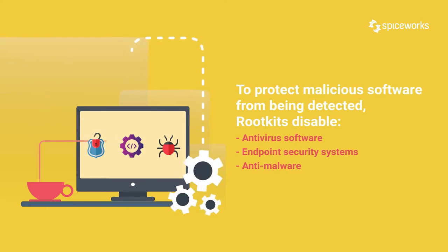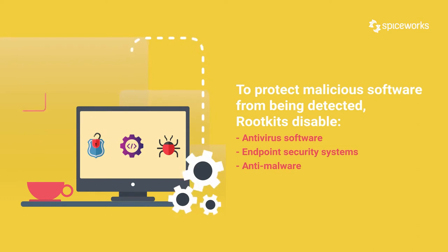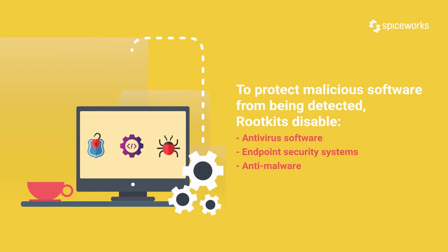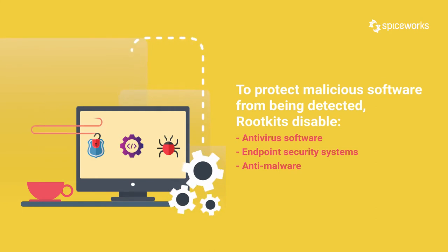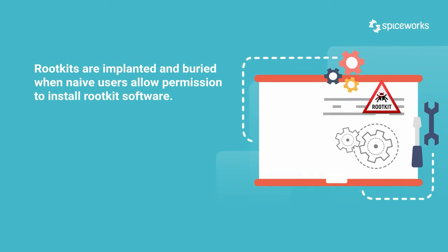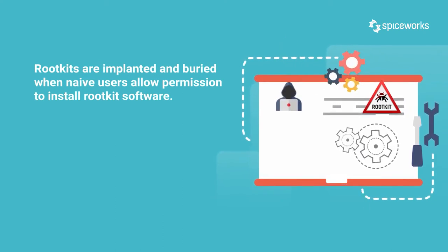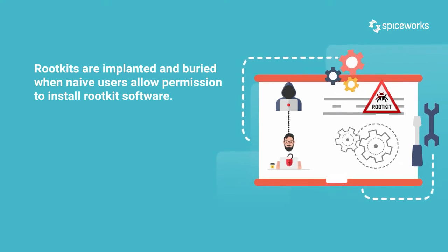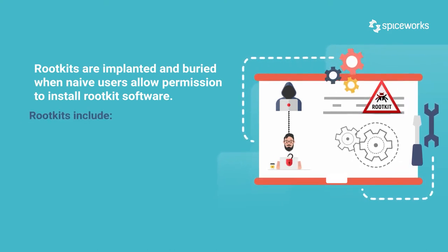Rootkits purchased on the dark web can be used in phishing attacks or social engineering to convince victims to install them on their computers, thereby granting remote attackers administrative access to the device. Rootkits are implanted and buried until they are activated by an attacker when naive users allow permission for rootkit installation software.